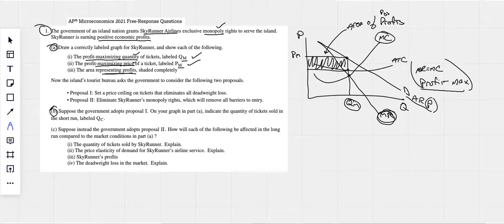Let's look at B here. I think we did all three of those. Let's read B and then we'll come back to what proposal one is. Suppose the government adopts proposal one on your graph in part A. Indicate the quantity of tickets sold in the short run. Label it QC.